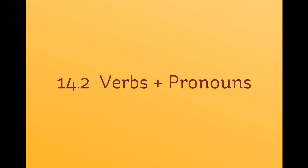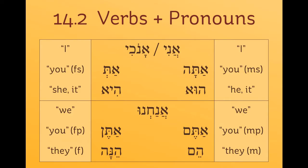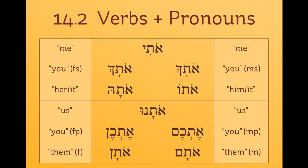Next, we have verbs plus pronouns. When a pronoun attaches to the end of a verb, it functions as the direct object of that verb. As a quick review: subject pronouns are always written independently as their own word and function as the subject of the verb. Object pronouns are also written independently — they're formed by taking the attached pronoun and adding it to 'et,' the direct object marker.